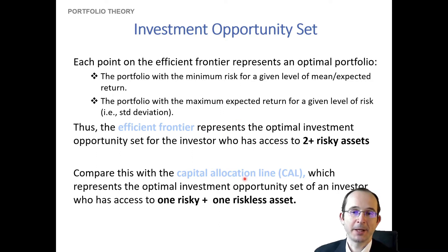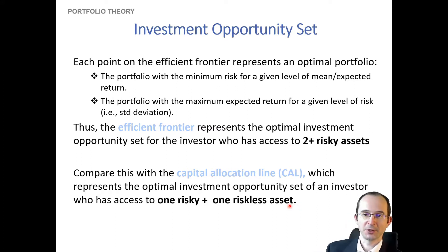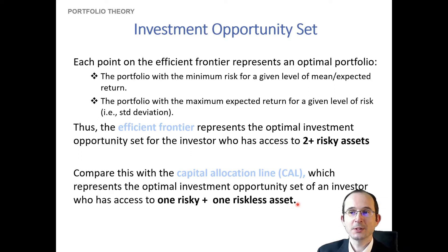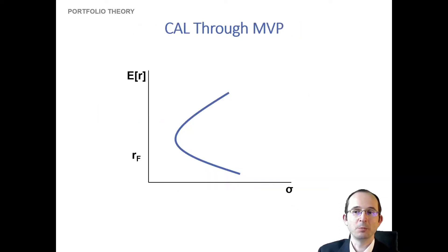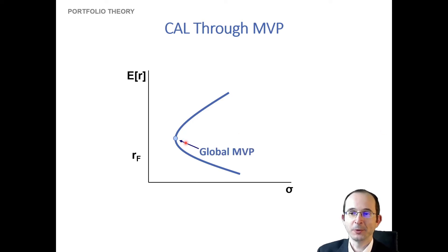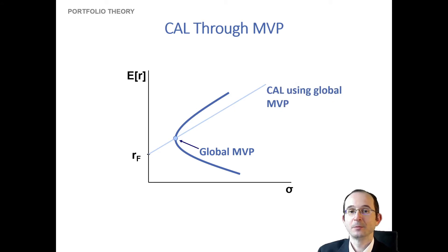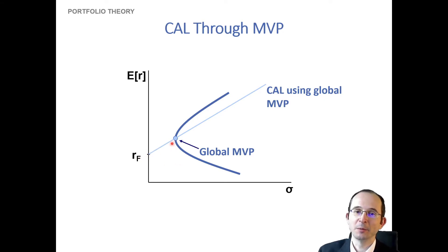We can then connect this to the capital allocation line, which will let us combine the efficient frontier with the risk-free asset. Any point on the efficient frontier is essentially a pretty good risky portfolio, so we can draw a capital allocation line through a point on the minimum variance frontier — specifically, through our global minimum variance portfolio. This essentially means we'll be investing in a portfolio comprised of the risk-free asset and the minimum variance portfolio.